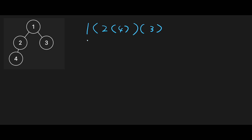So this one is the root node, this two is the left child of the root node, and this four is the left child of two. Then this three is the right child of the root node.